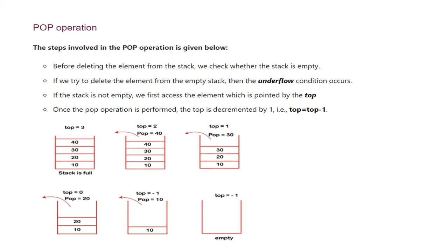Pop 30 and decrement top to 1. Pop 20 and top becomes 0. Pop 10 and top becomes minus 1. Now if we try to pop again we cannot, because top equals minus 1, meaning the stack is empty.